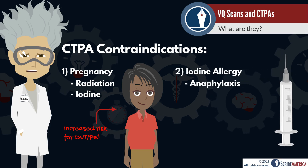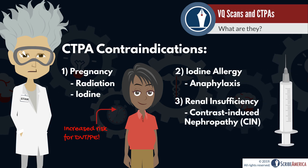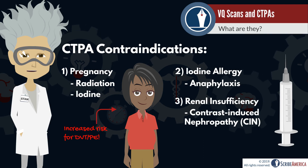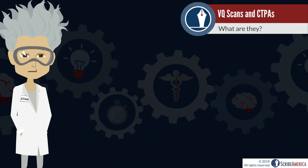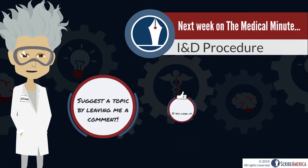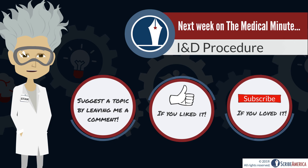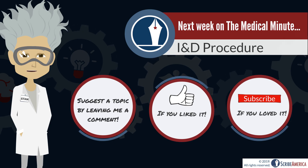Radiation exposure isn't the only thing to take into consideration. The iodine-containing contrast used in a CTPA poses a risk to those with iodine allergies or renal insufficiency. VQ scans may be a suboptimal test for PE, but they provide a good plan B for patients who can't undergo a CTPA.